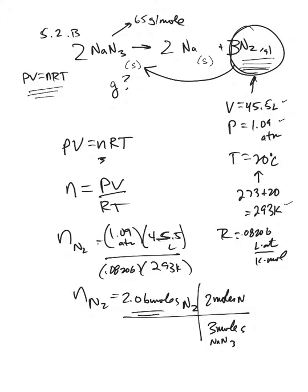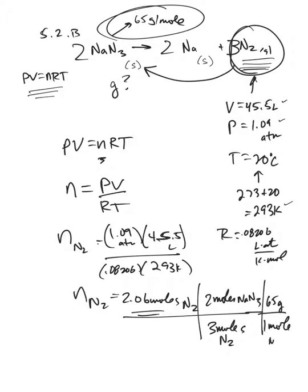Whoops, daddy made a mistake. This is 3 moles of N2. Okay, and then finally, the grams per mole is 65, so 65 grams per one mole of NaN3 gives me a final answer of 89.3 grams of NaN3.